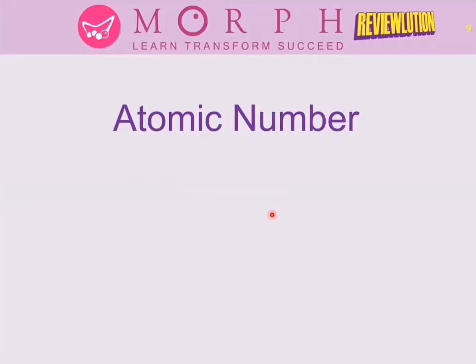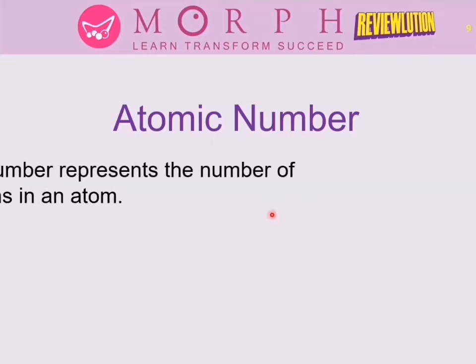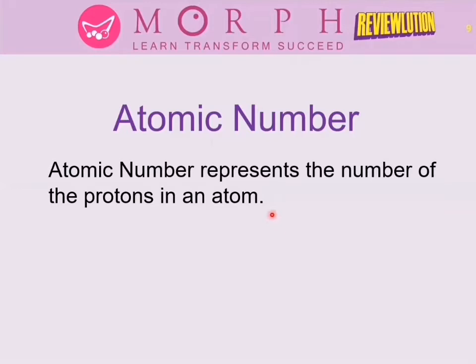Since the atomic number is the identity of an element, and protons are found in the nucleus, the identity of the element is found in the nucleus. Count the number of protons in an atom and you get the atomic number. Looking back at our example: the atom with one proton has atomic number 1 (hydrogen), and the atom with two protons has atomic number 2 (helium).